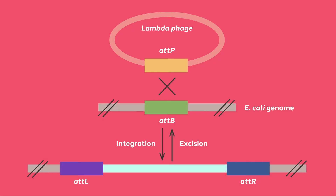The phage lambda, in an attempt to outwit the restriction enzyme defense of E. coli, evolved a lysogenic pathway. In this situation, the phage uses site-specific recombination to integrate itself into the bacterial genome and hide from the restriction enzyme defense. The enzymes used by phage lambda to integrate and later excise itself are the basis of gateway cloning.